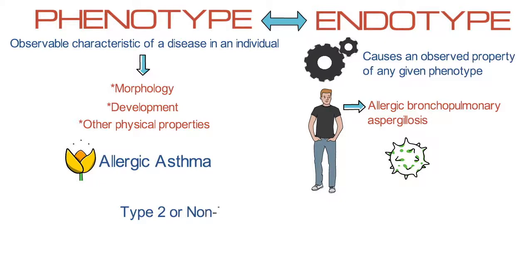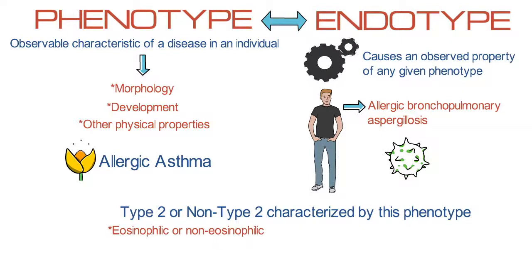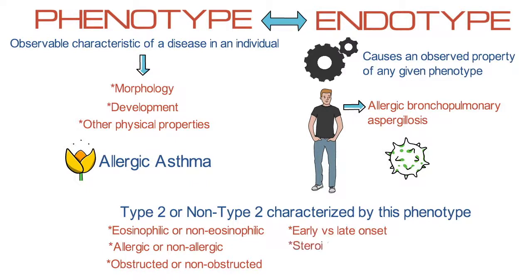Patients who have type 2 or non-type 2 asthma are characterized by this phenotype. Other ways that we phenotype include eosinophilic or non-eosinophilic asthma, allergic or non-allergic, obstructive versus non-obstructive, early versus late onset, and steroid-responsive or non-responsive.